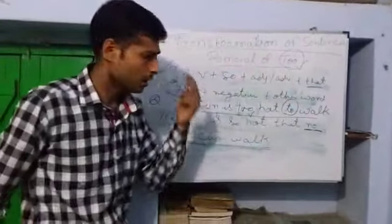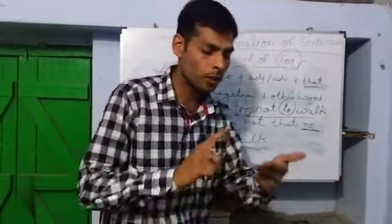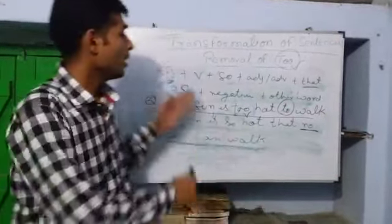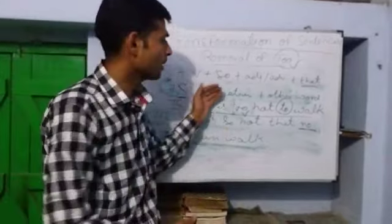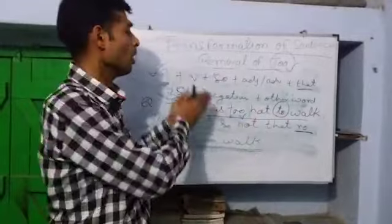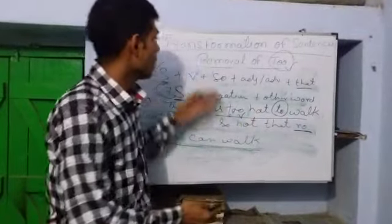This is the whole part and parcel of removal of too. There are only two types of removal of too: infinitives and without infinitives. I have already described it. My dear students, please prepare a lot of questions based on these two sections of removal of too.